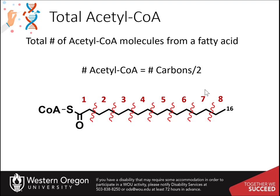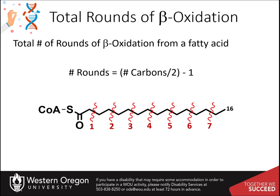So for the 16-carbon fatty acid, 8 acetyl-CoA molecules can be formed. The total rounds of beta-oxidation needed to liberate all the acetyl-CoA molecules is found by dividing the total number of carbons by 2 and then subtracting 1. Thus, for a 16-carbon fatty acid, dividing by 2 gives you 8, and then subtract 1 to yield a total of 7 rounds of beta-oxidation required.